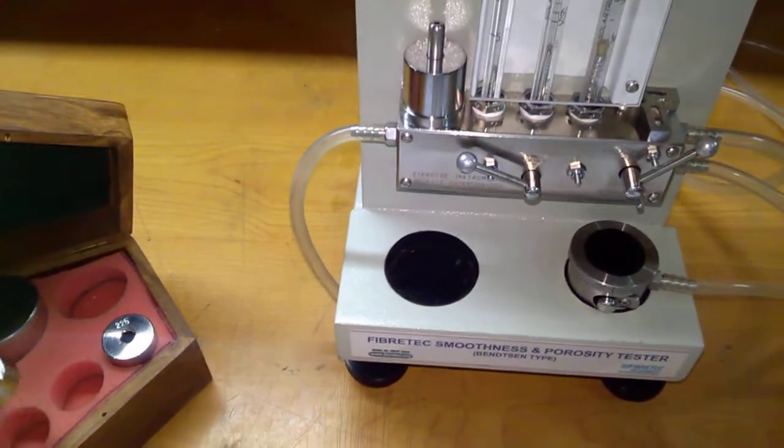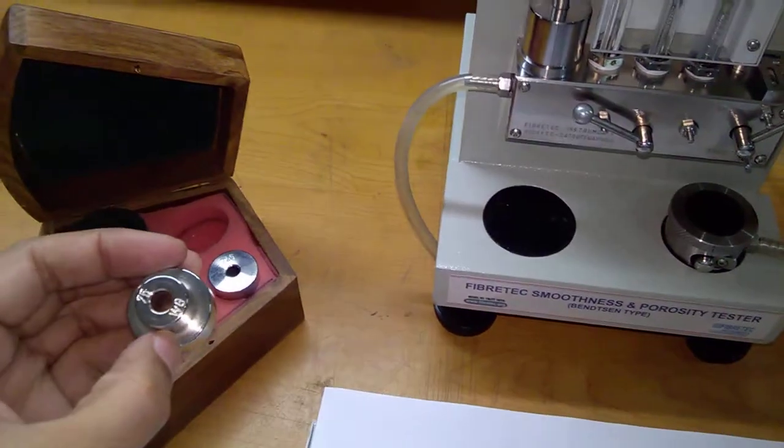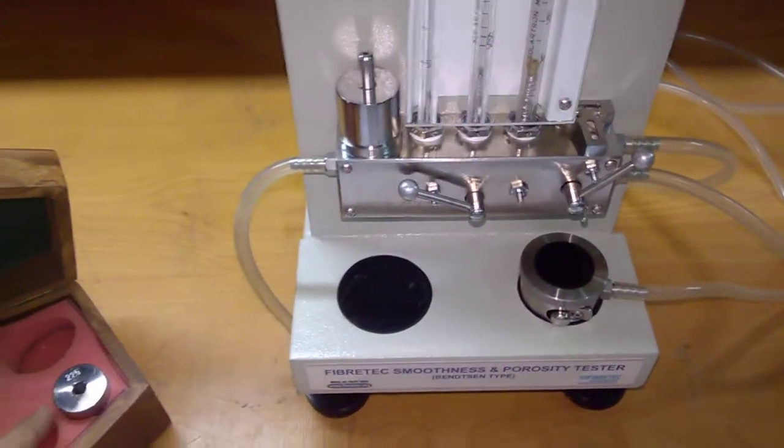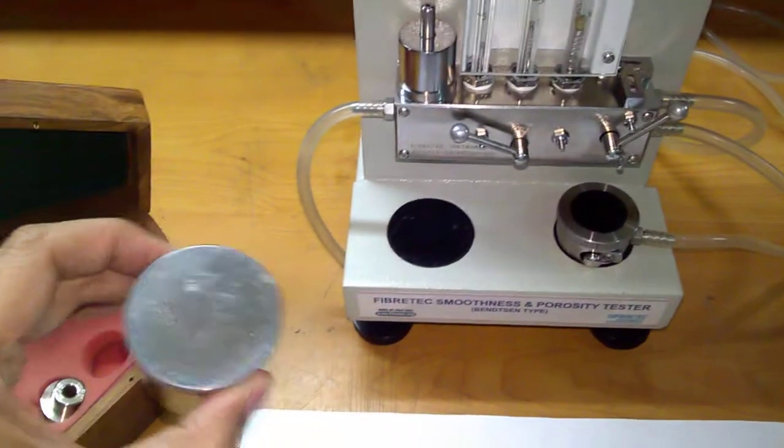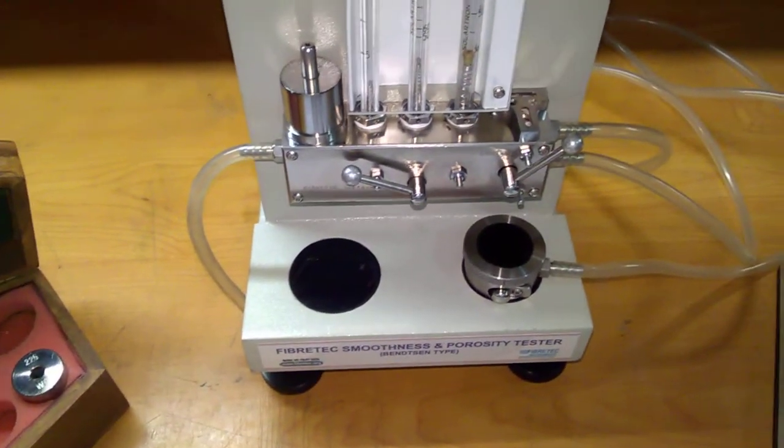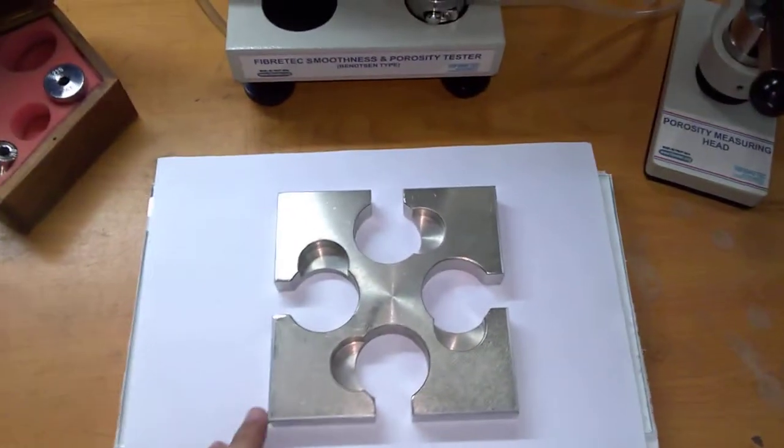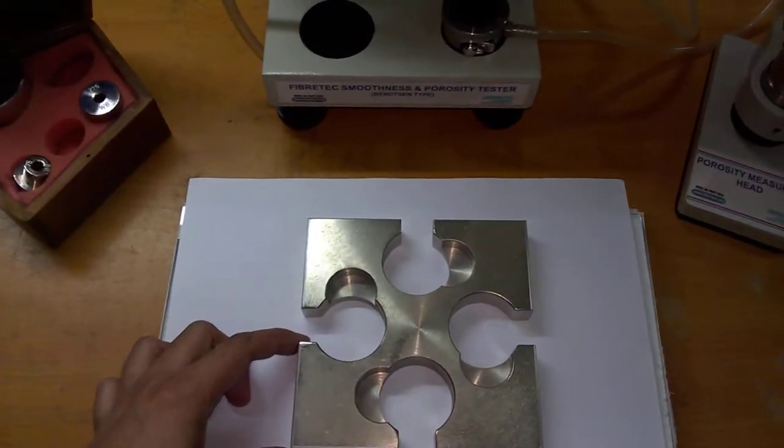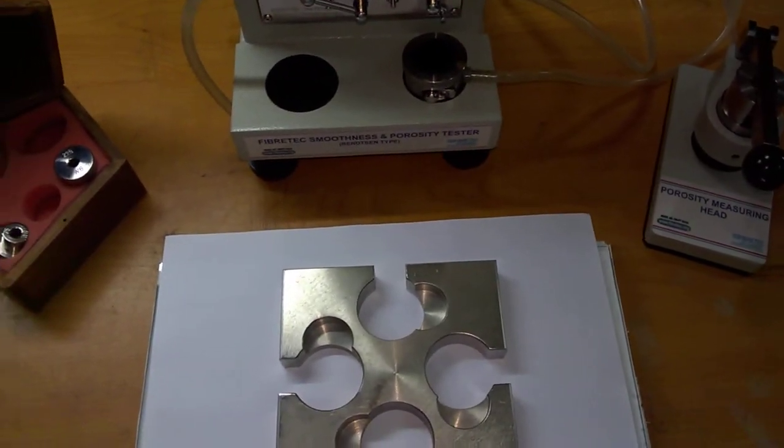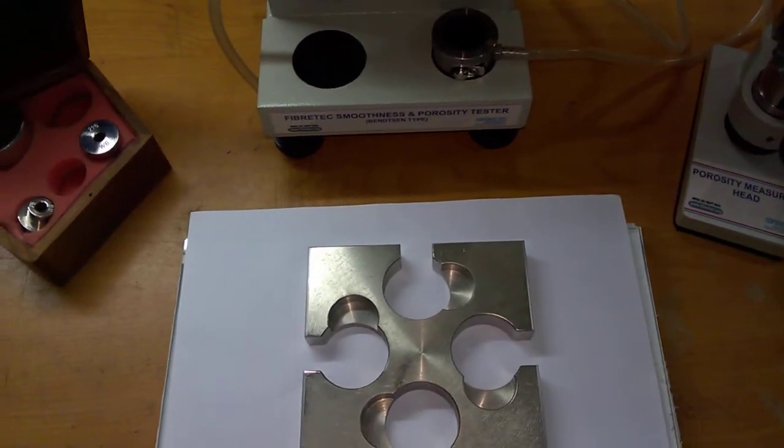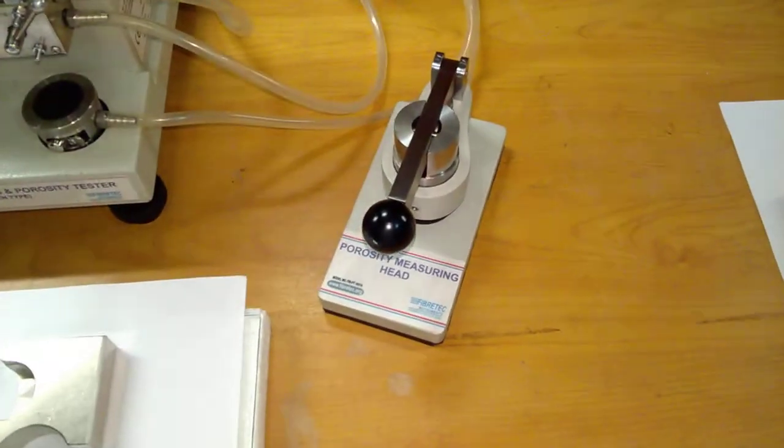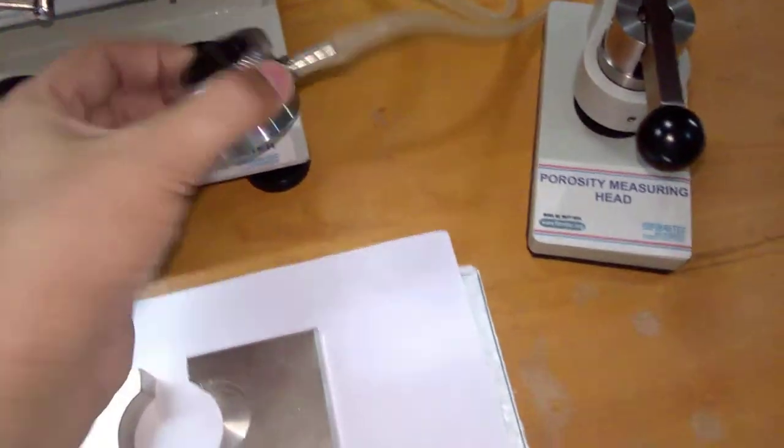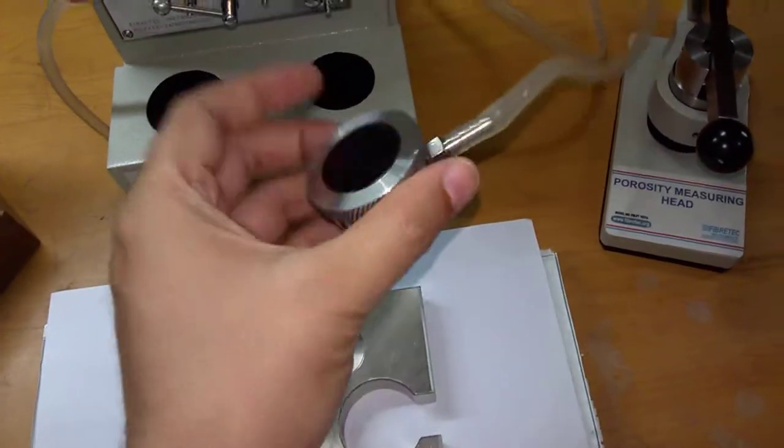You can see there are a few weights over here, monostate weights for 75, 150, and 225, and this weight is for measuring the hardness. We have a guide to maintain the paper in a uniform manner. This is basically a porosity measuring head, and this is a head to measure the smoothness.